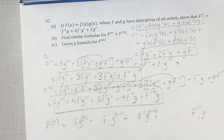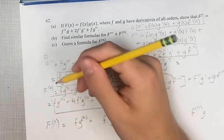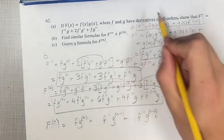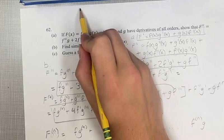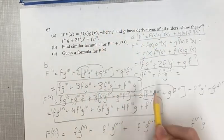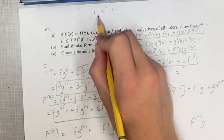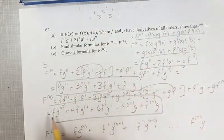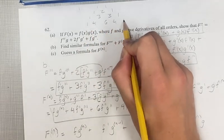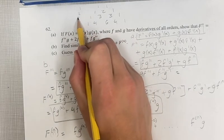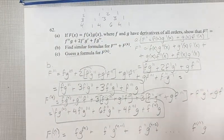Now, what are the coefficients? For the first derivative, we have one and one. For the second derivative, we have one, two, one. For the third derivative, one, three, three, one. For the fourth derivative, one, four, six, four, one. You'll notice this is Pascal's triangle.